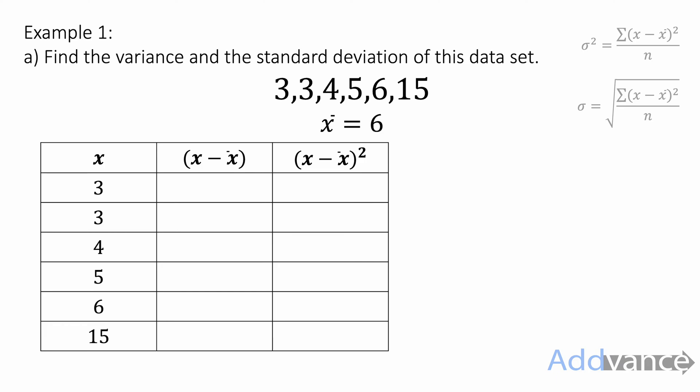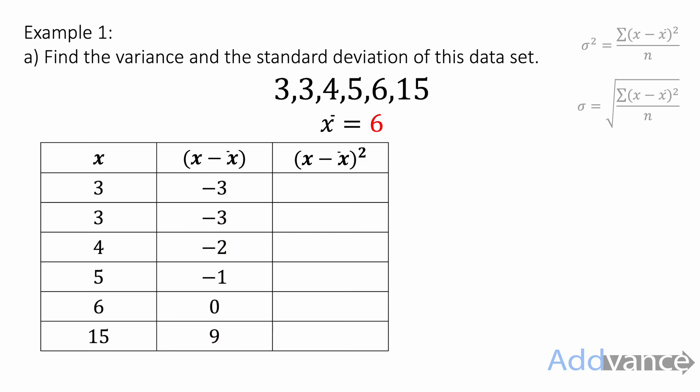We now set up a table with one column for x, another column for x minus the mean, and a third column for (x minus the mean) squared. The first thing we do is subtract the mean from all the x values. So the first x value is 3, we subtract 6. The last x value is 15, we subtract 6. We take each x value and subtract the mean, then simplify.